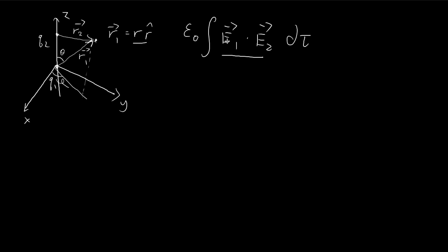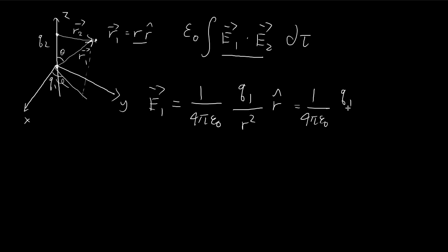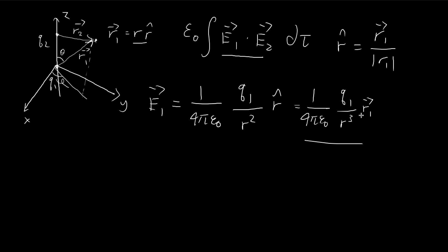To evaluate this, let's find what E1 and E2 should be. E1 is equal to 1 over 4π epsilon times q1 divided by r squared, multiplied by the unit vector r-hat. To simplify later, I'll substitute in r1: the unit vector r-hat equals r1 divided by the magnitude of r1, and since I'm using spherical coordinates, the magnitude of r1 is just the variable r.